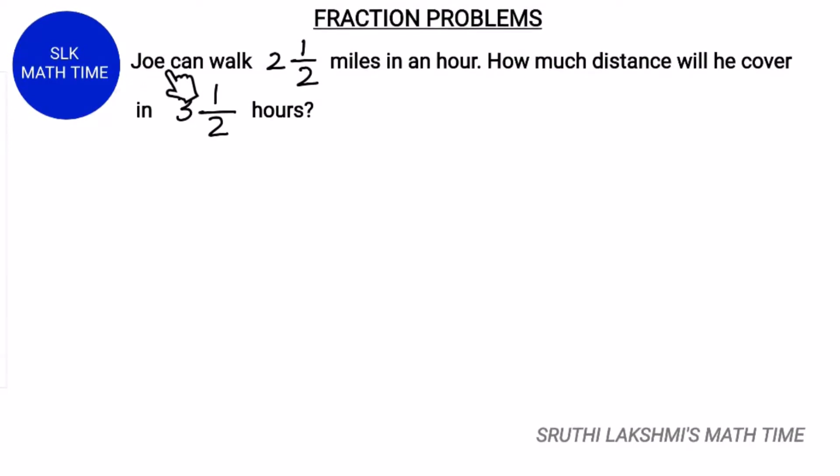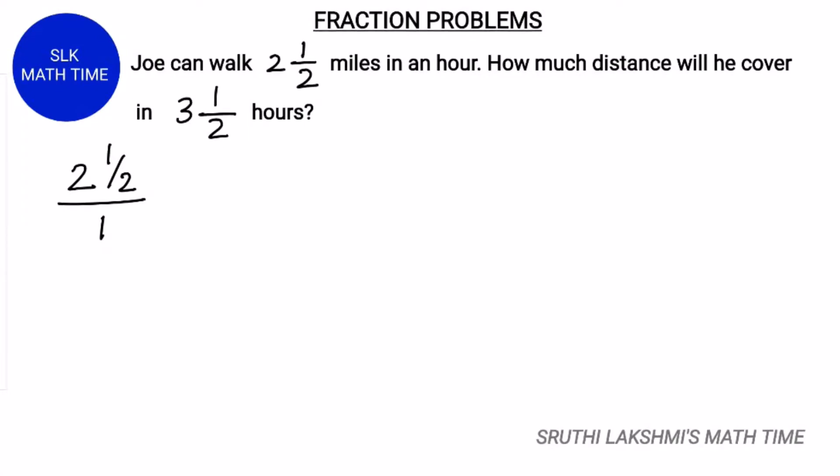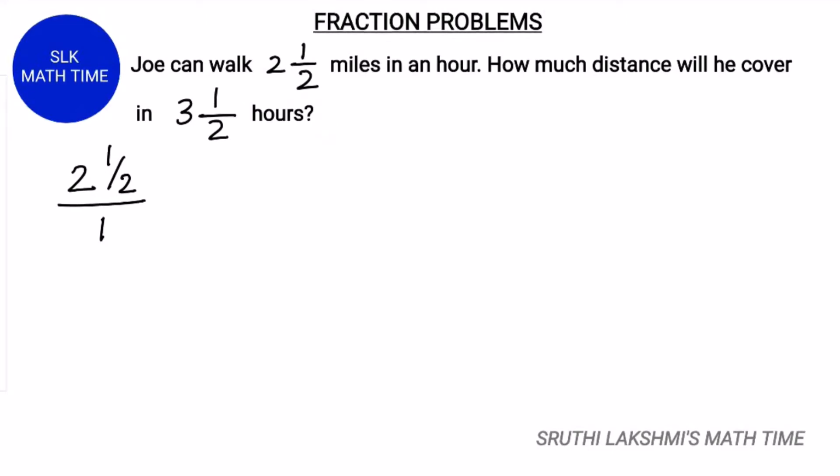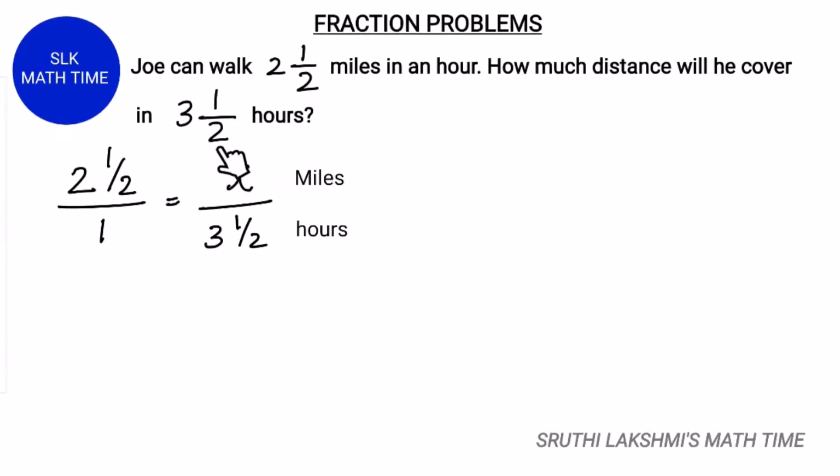Joe can walk 2 and a half miles in an hour. So this can be written as 2½ by 1. How much distance will he cover in 3 and a half hours? So this can be written as x by 3½ because we have to find the x value for miles. How many miles he can walk in 3 and a half hours?